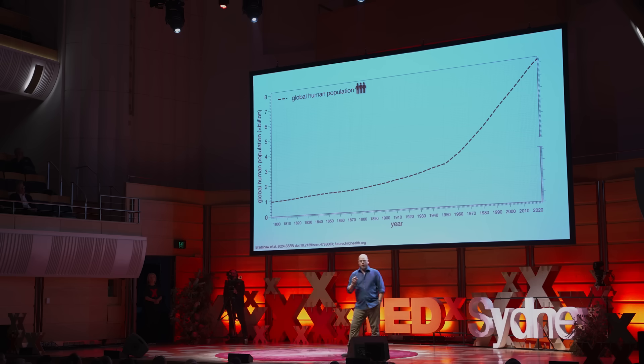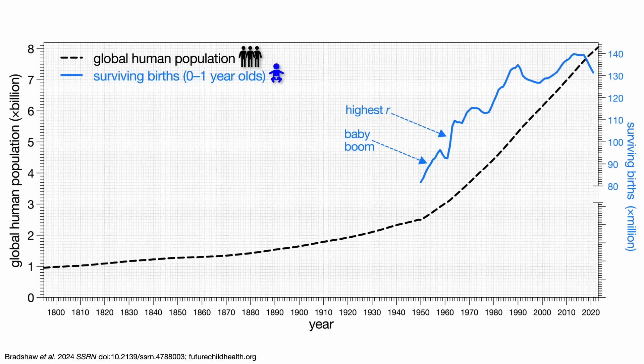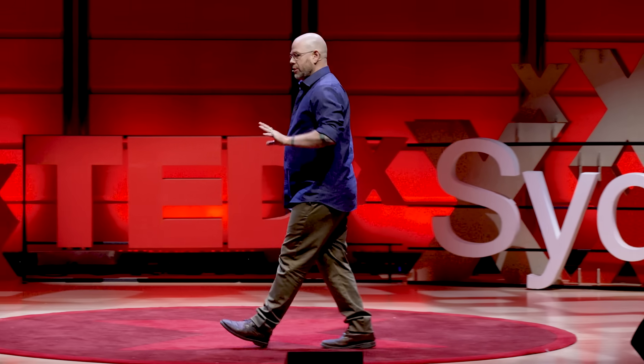Coming back to our human population trajectory, this time only the last few hundred years. Unfortunately, we've only really started collecting human demographic data at scale globally since 1950. In the early 1950s, we can see that baby boom post-World War II based on the number of surviving births, but the actual highest rate of increase was in the 60s. Against this backdrop, I'm going to put up the 17 largest human mortality events ever — going from the Napoleonic Wars through the World Wars and even up to COVID-19, which killed about 15 million people. These don't make a dent in the trajectory. Arguably, World War II had a little bit of a dent with 50 million people dead, but we have not changed this trajectory at all.